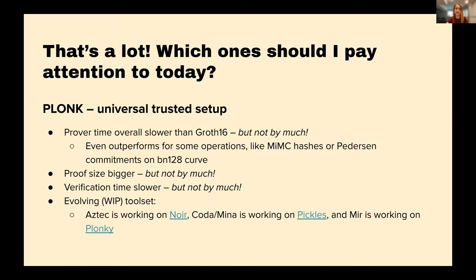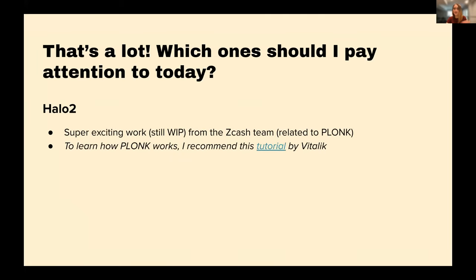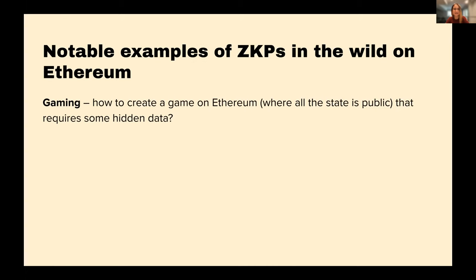PLONK is notable because for the first time there's a proof system where, even though it's still slower than Groth16 on some metrics, there's a ton of promise that ongoing research will bring significant improvements. Halo 2, developed by the Zcash team, is the other one worth mentioning — it's still a work in progress. If you want to learn how PLONK works, which is related to how Halo 2 works, there's a great tutorial by Vitalik that I've linked.